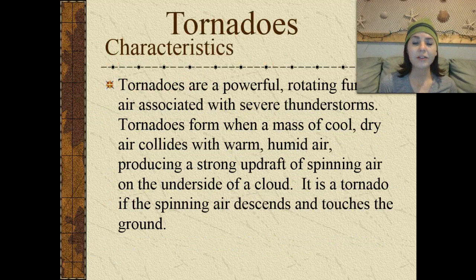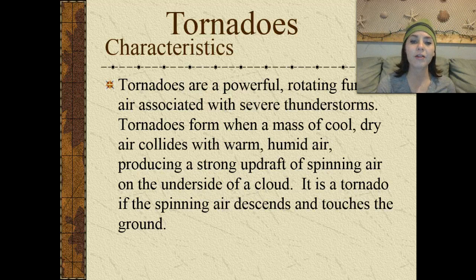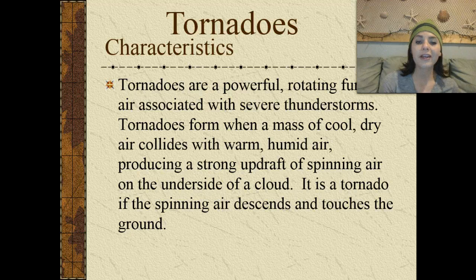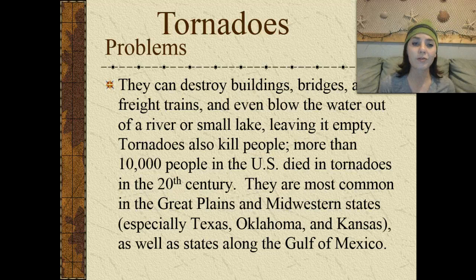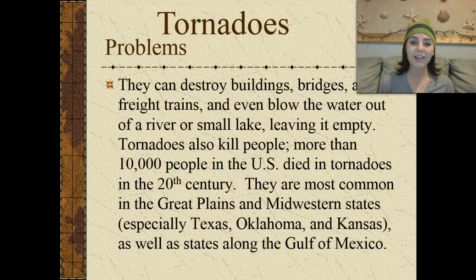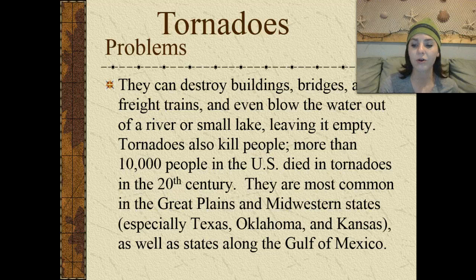Tornadoes can also occur. These are powerful rotating funnels of air associated with severe thunderstorms. Tornadoes form when a mass of cool, dry air collides with warm, humid air, producing a very strong updraft of spinning air on the underside of a cloud. It is a tornado if the spinning air descends and actually touches the ground. Tornadoes can destroy buildings, bridges, and freight trains. They can even blow water out of rivers and small lakes, leaving them completely empty. More than 10,000 people in the United States have died in tornadoes in the 20th century alone. They are most common in the Great Plains and Midwestern states, especially Texas, Oklahoma, and Kansas, as well as states along the Gulf Coast of Mexico.